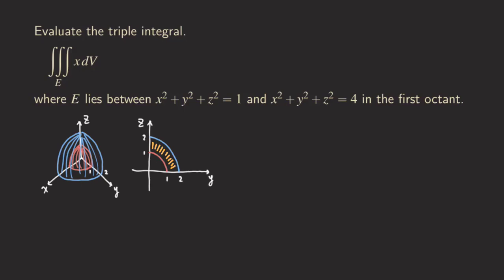Now the question is how do we set up the triple integral for this solid. Because it's bounded by two spheres, the easiest way is to use spherical coordinates. The conversion formulas are: x = ρ sin φ cos θ, y = ρ sin φ sin θ, and z = ρ cos φ.